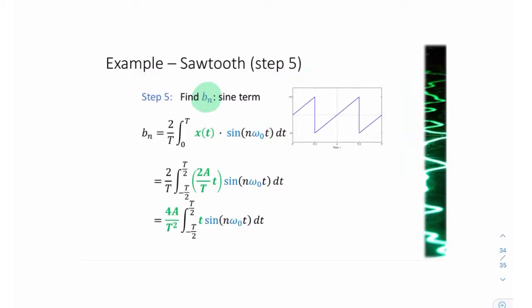The coefficient of the sines, that's the bn terms. These bn's we can compute using this Fourier series formula, but what we need is x(t). We don't have x(t). All we have is a sketch of x(t).